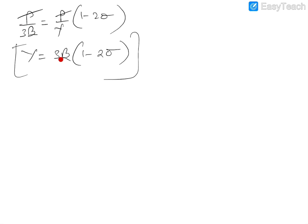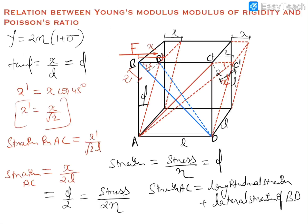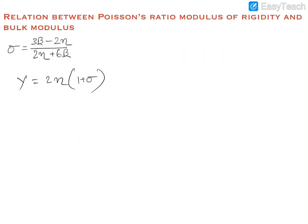We have also discussed that gamma is equal to 3 beta into 1 minus 2 sigma. This we have already proved in the previous video. Now we have to establish the relationship between these three variables: eta, sigma, and beta, and we have to eliminate gamma.